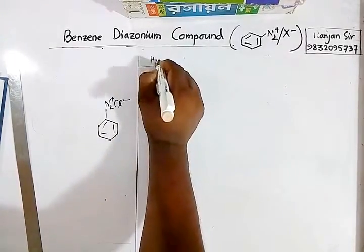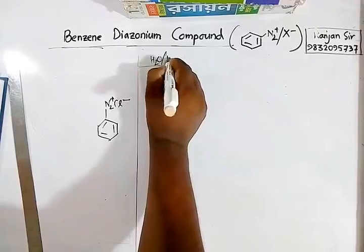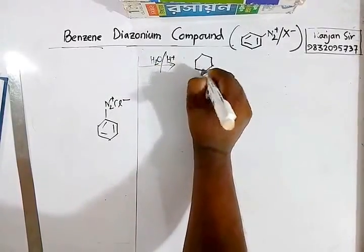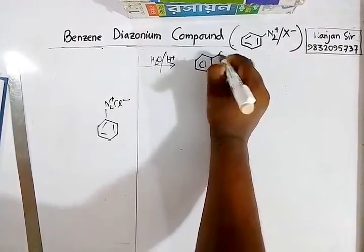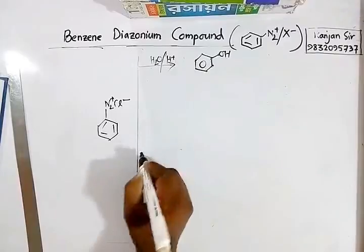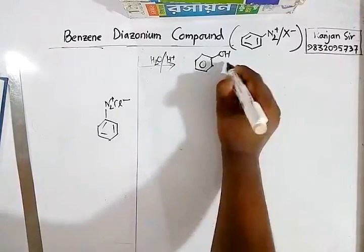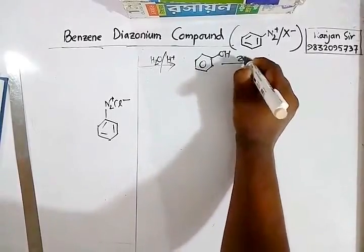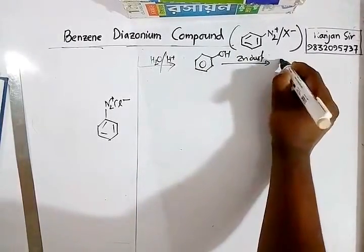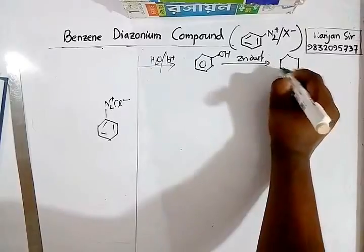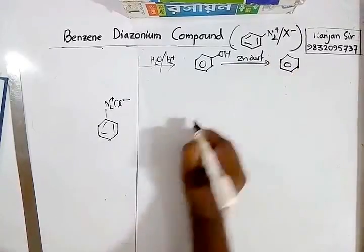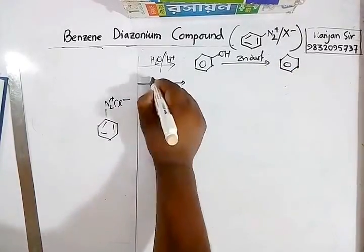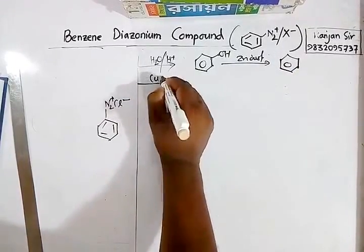A large number of aromatic compounds can be synthesized from benzene diazonium chloride. When hydrolyzed in acidic medium, it forms phenol. If you apply zinc dust, you get benzene.